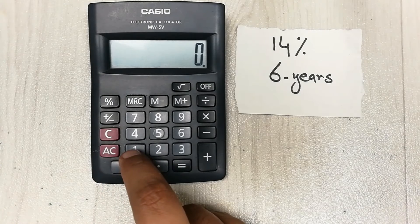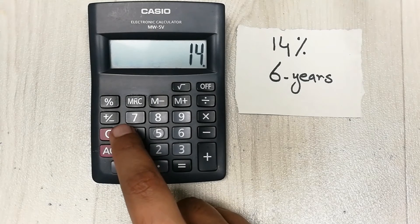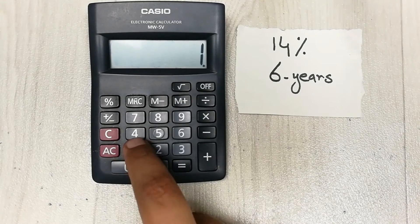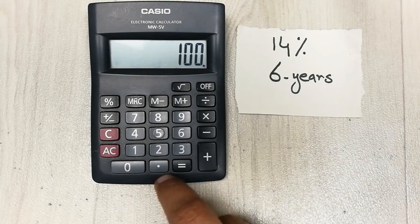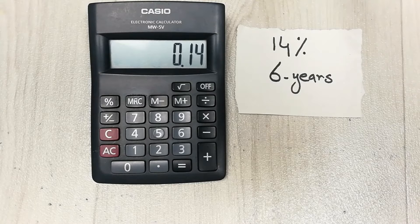In the first step, we will divide this 14, divide it with 100, and then we press the equal button. This is the first step: 0.14.